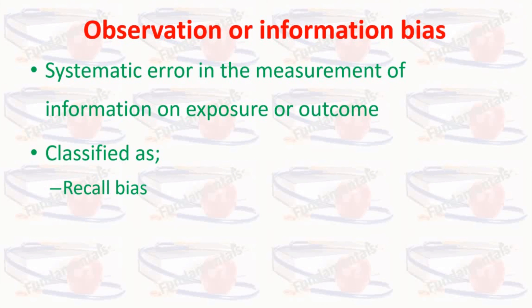Recall bias occurs when individuals with previous adverse health outcomes remember and report their previous exposure differently, or with a different degree of completeness and accuracy, than those who are unexposed. It can lead to an over- or underestimate of the association between exposure and disease, depending on whether cases recall their exposures to a greater or lesser extent than controls. For example, in a case-control study, mothers whose pregnancies ended in fetal death may report their exposure experience differently than mothers whose pregnancies ended normally — that is, cases may have better recall of past exposure than controls.